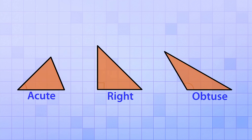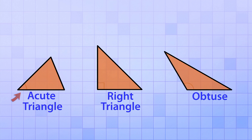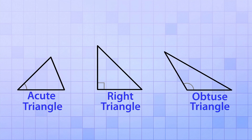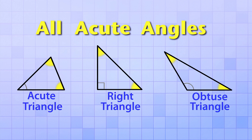Can you guess what these three different kinds of triangles are called? The one made from the right angle is called a right triangle. The one made from the acute angle is called an acute triangle. And the one made from the obtuse angle is called an obtuse triangle. Notice that for each of our three triangles, the new angles formed when we closed the shapes are all acute angles — so triangles always have at least two acute angles.